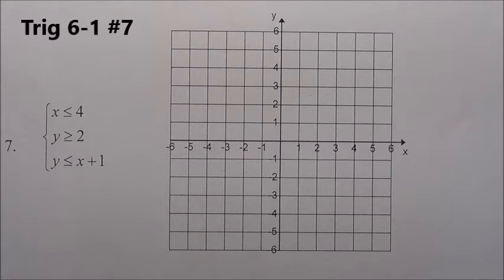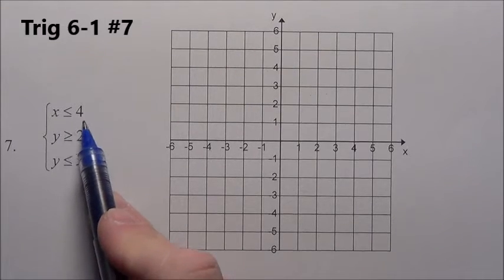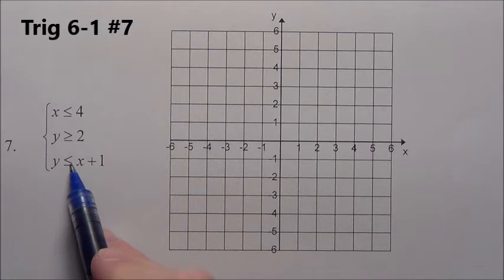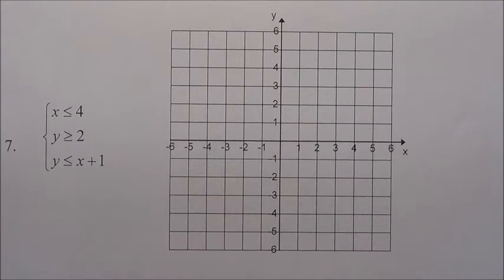Alright, problem 7. We got all types of stuff here. We need x is less than or equal to 4, y is greater than or equal to 2, and y is less than or equal to x plus 1.